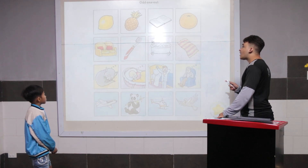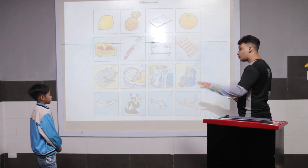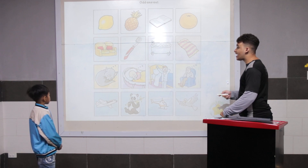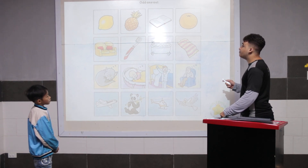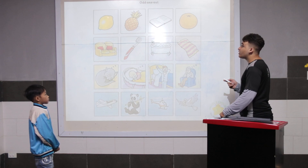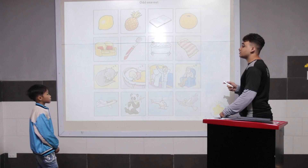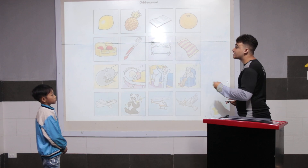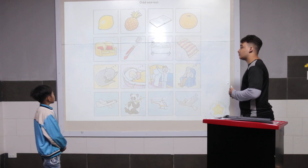I will explain row one. You explain rows two, three, and four. So, in row one, the book is different because the lemon, pineapple, and the orange are their offerings. Can you explain rows two, three, and four, please?